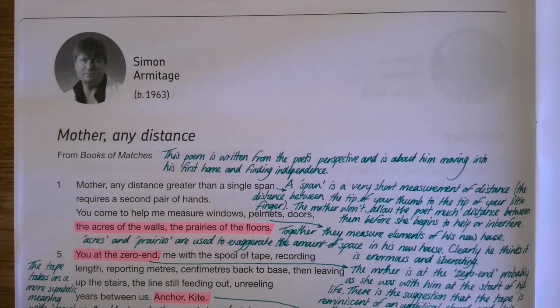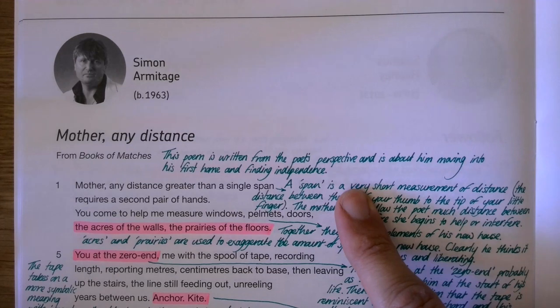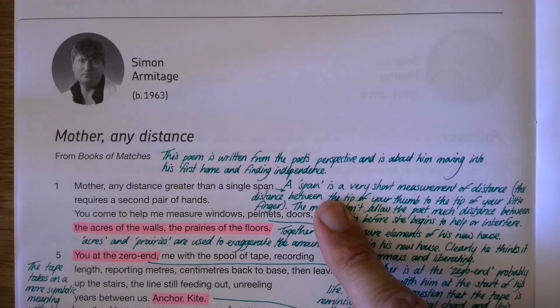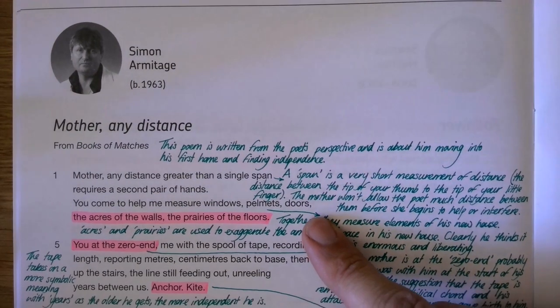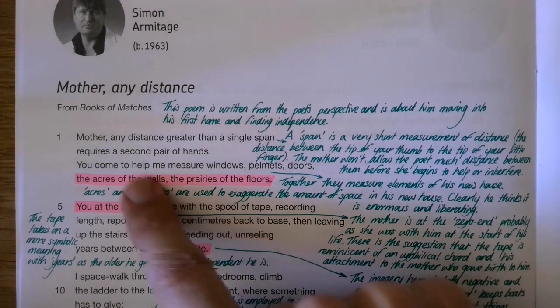So to start off with, Mother Any Distance is written by Simon Armitage. It's written from his perspective and it's about him moving into his first home and his mother helping him do all the decorations and measure the place up for any modifications they need to do.